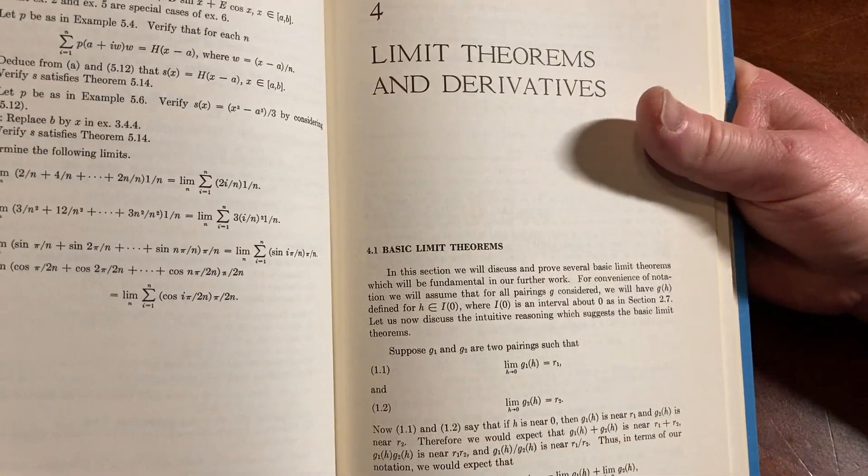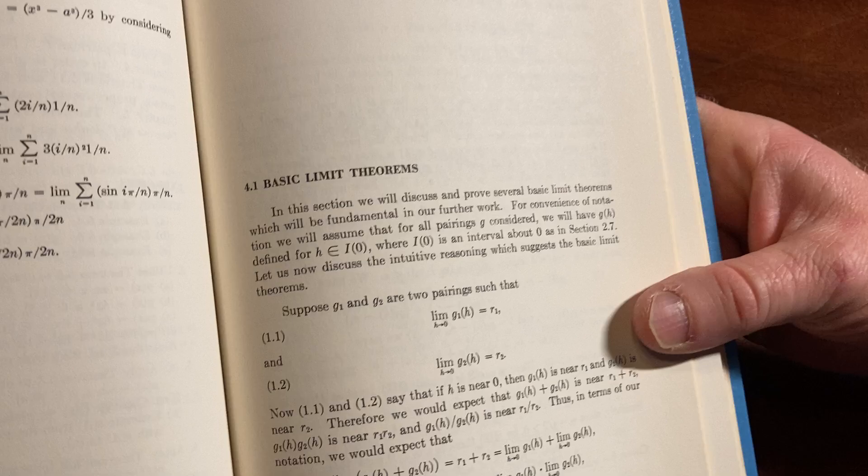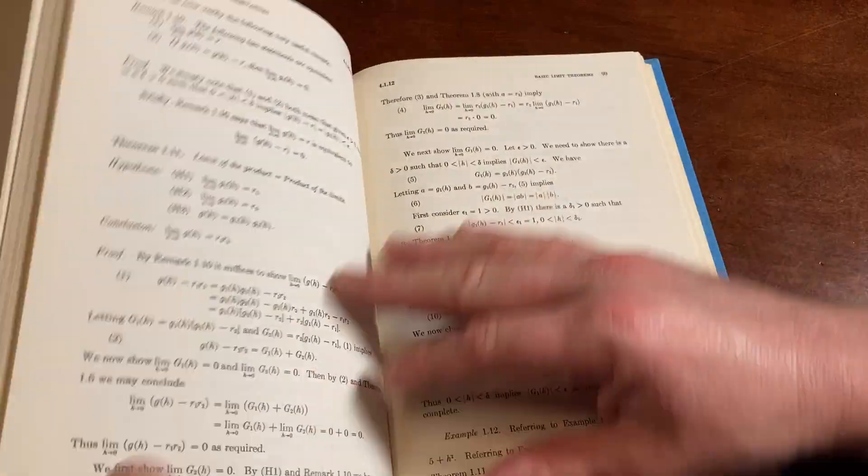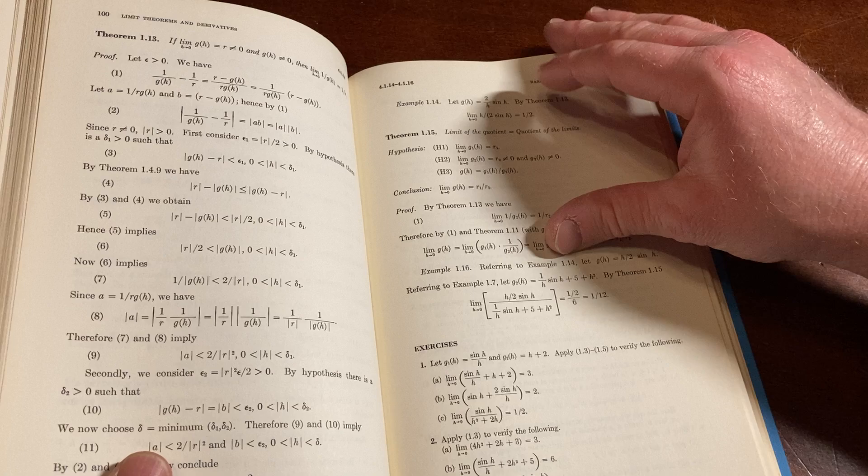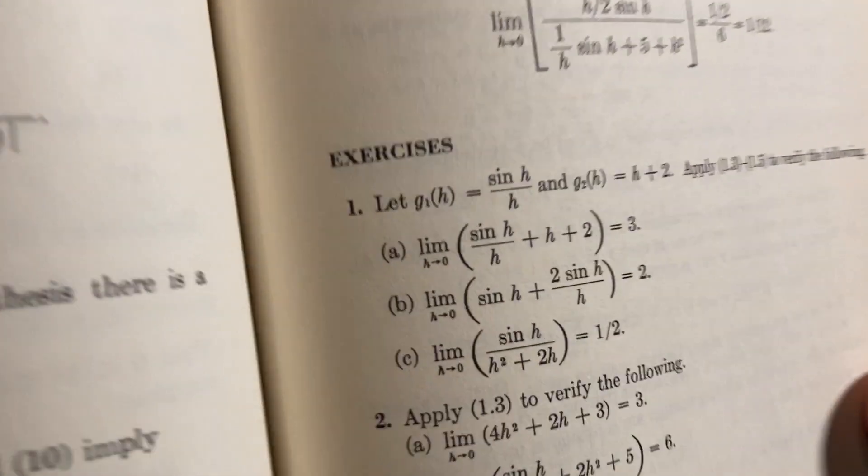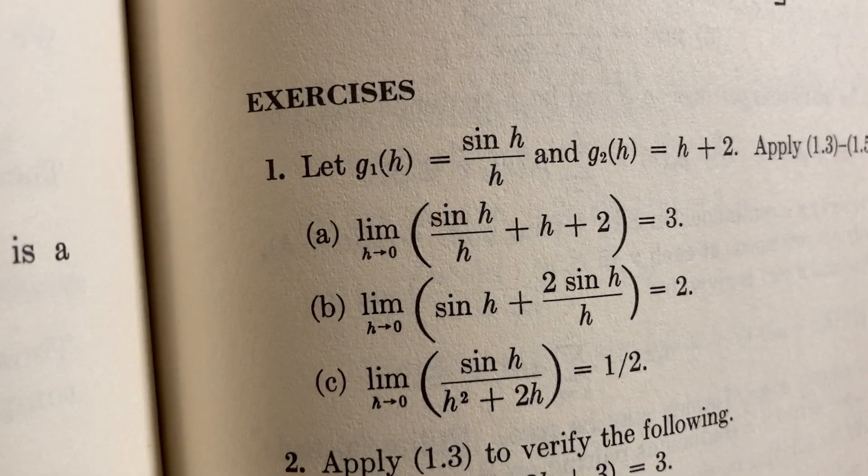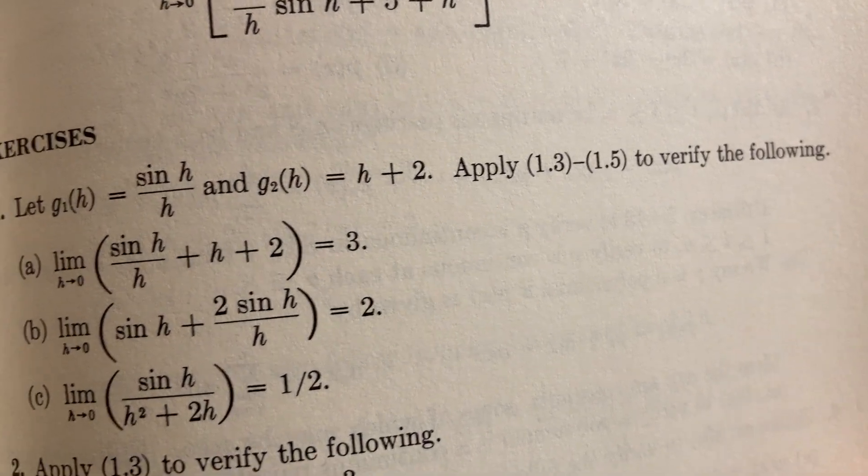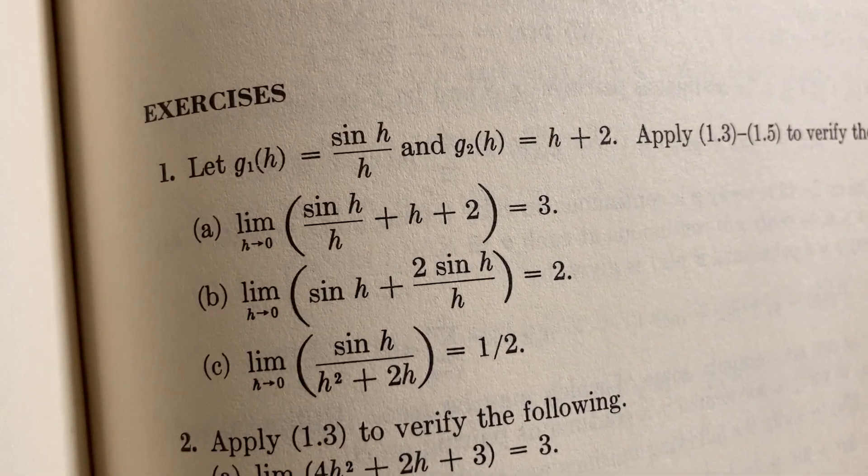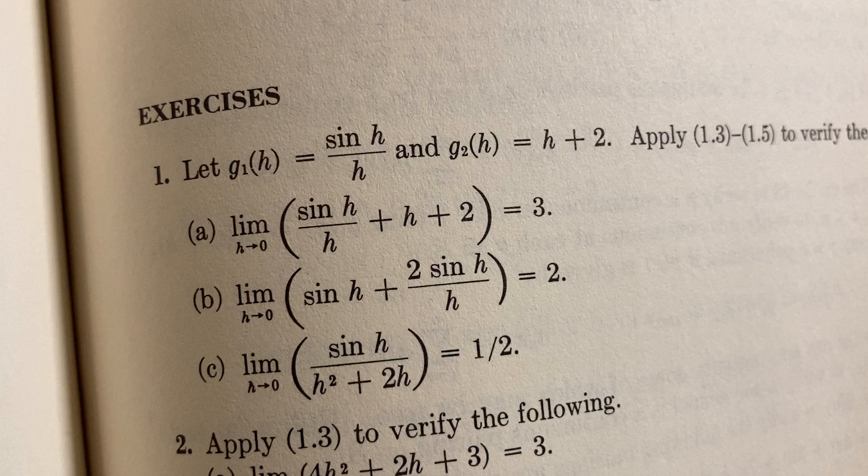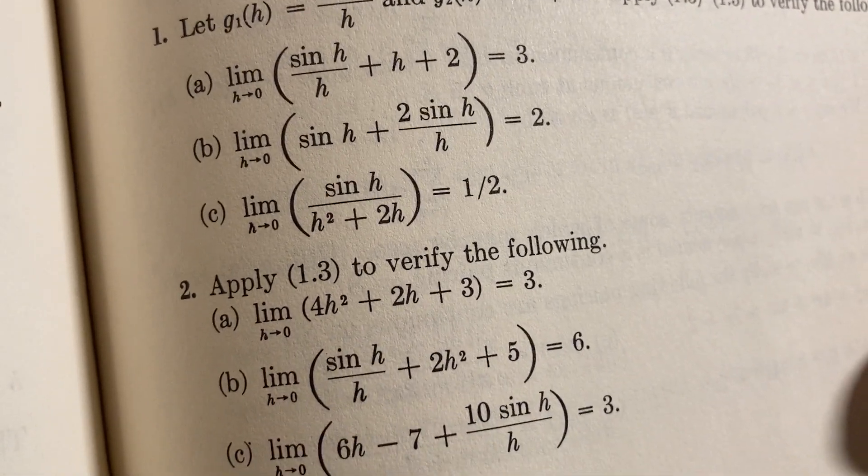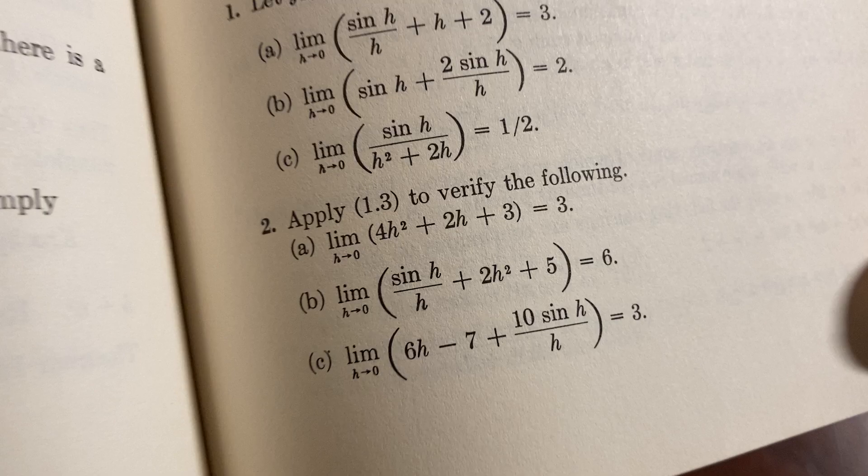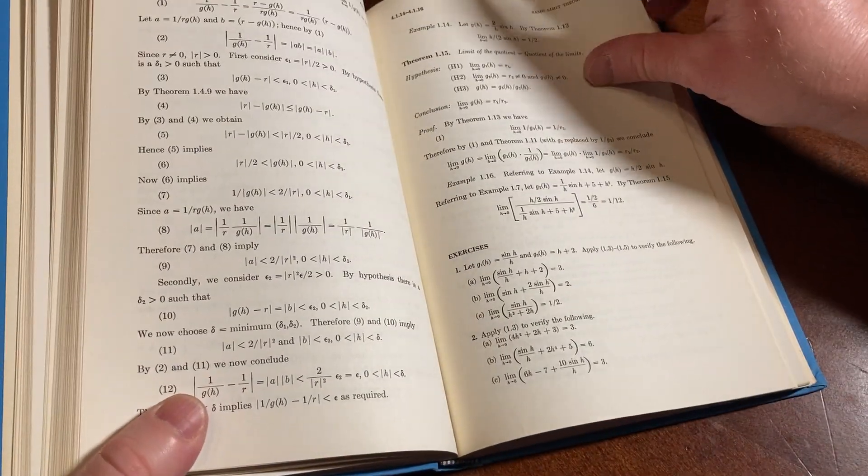Limit theorems and derivatives, basic limit theorems, yeah. Let's look at some of the exercises here. Let's jump to the exercises. Let's see how hard they are. So here we go. Exercises. g of h equals sine h over h, and g of h equals h plus 2. Okay, apply those things to verify the following. Okay, so they're just having you apply the limit rule. That's really easy. I guess they want you to formally write it out and stuff, so there is work to show, but it's really not hard.